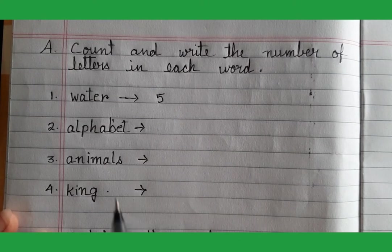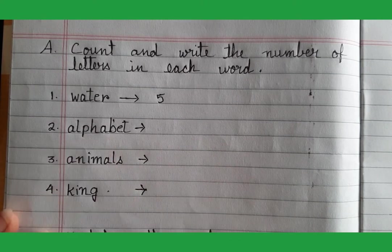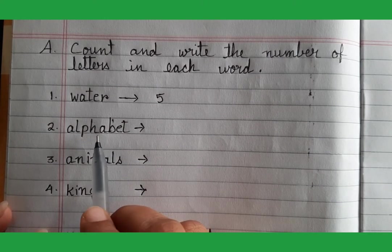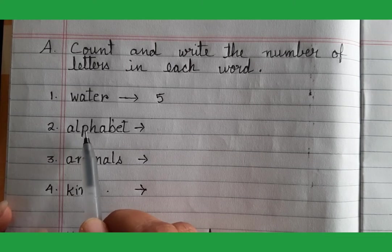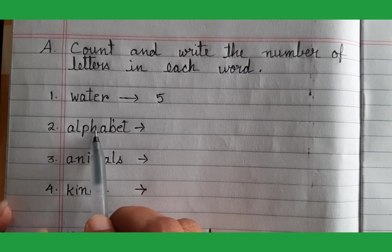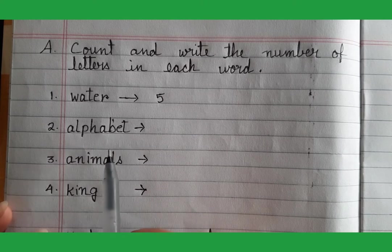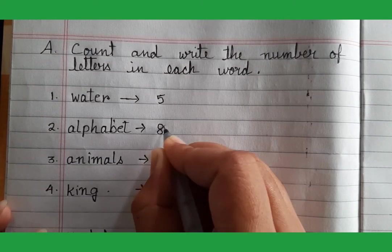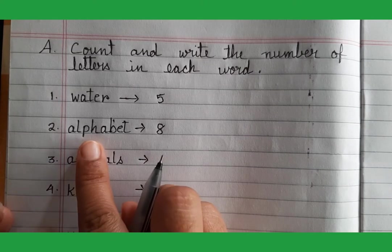Now next is 'alphabet.' In the word 'alphabet,' how many letters are there? One, two, three, four, five, six, seven, eight — eight letters. So we will write here: eight. Eight letters are there in the word 'alphabet.'